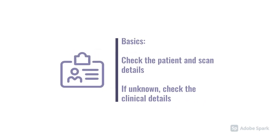We need to start with the simple stuff: make sure you're checking the patient details and also checking the scan details. Is it the right patient? Are we looking at the right scan? And ideally, look at the clinical details as well — that will just help target what you need to look at. Is this a trauma patient? Have they fallen over, hit their head? Is this a stroke patient? Is this somebody we're worried about intracranial pressure for example? That'll just help you look for some key pathology.